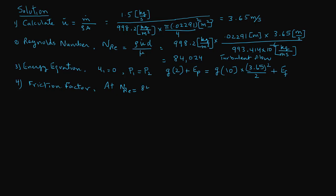At a Reynolds number of 84,024 and assuming the pipe is smooth (relative roughness equals zero), either from the Moody diagram or through spreadsheet calculation, we obtain the friction factor as 0.0046. Now we determine the various frictional terms in this system.